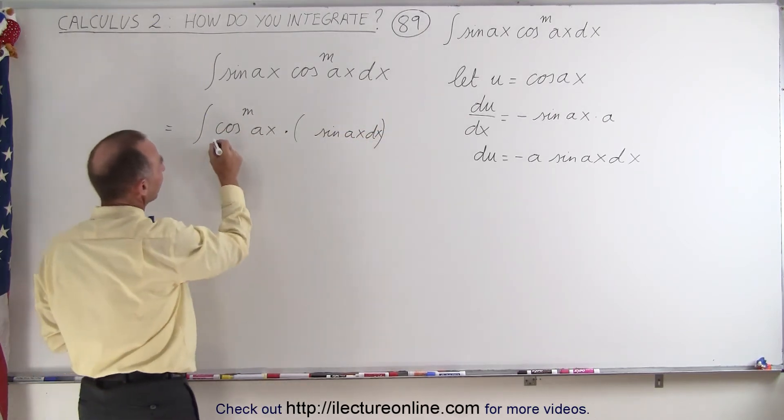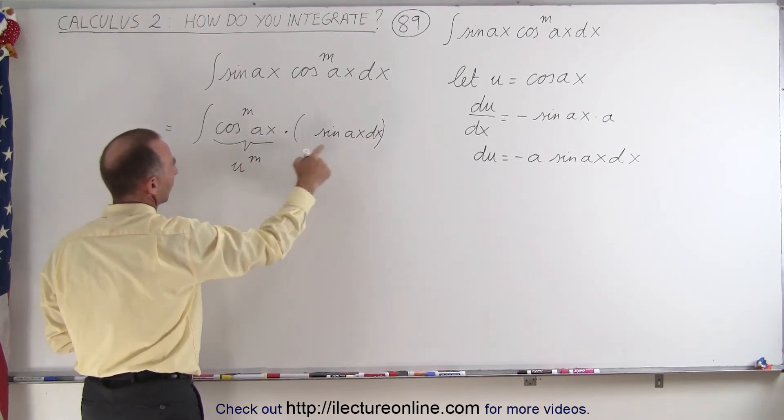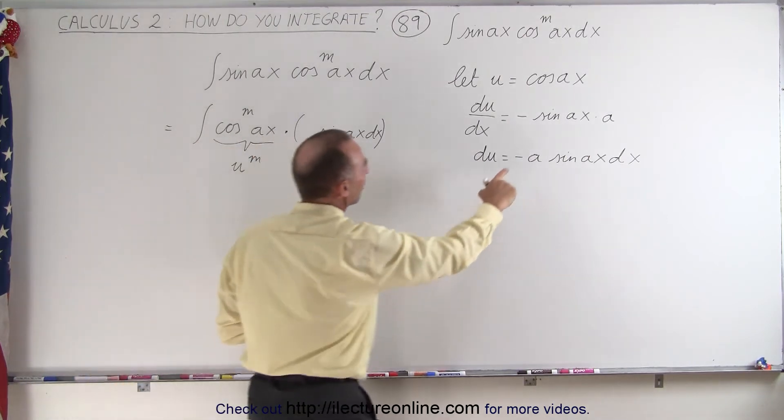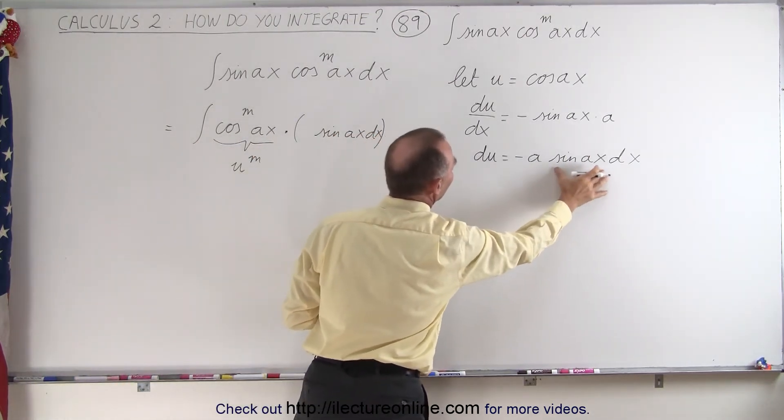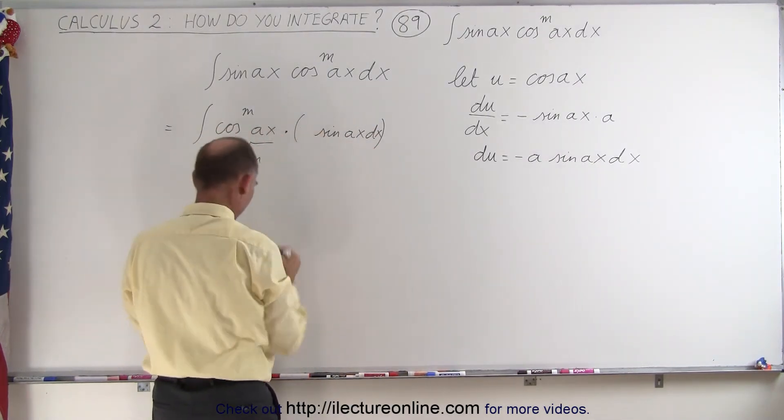Notice that this here is u to the m power. But here we don't quite have a du. The du is equal to minus a times this; we only have this portion right here, so we have to also multiply this times a minus a.